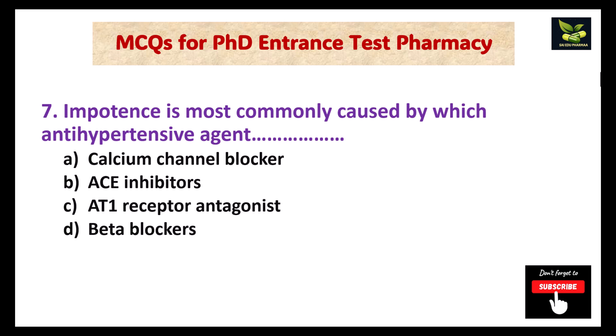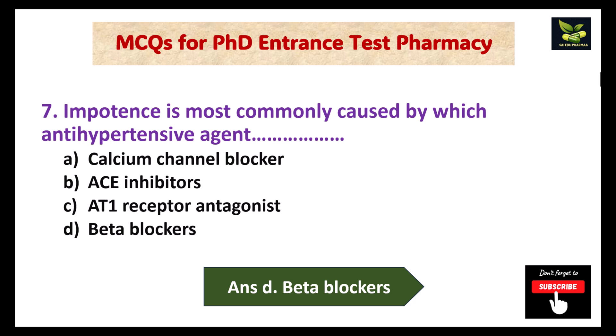Impotence is most commonly caused by which antihypertensive agent? Out of the four options, impotence is a side effect of which category of agents? The answer is D, that is beta blockers.